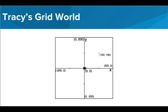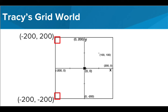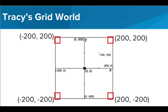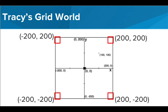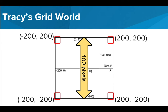This means that the top left corner has the coordinate (-200, 200), the bottom left corner has the coordinate (-200, -200), the top right corner has the coordinate (200, 200), and the bottom right corner has the coordinate (200, -200). So how wide is the total canvas? If our X axis goes from negative 200 to positive 200, that means the width is 400 pixels long. And this is the same for the height of our canvas. It is important to know that Tracy lives in a 400 by 400 grid world.